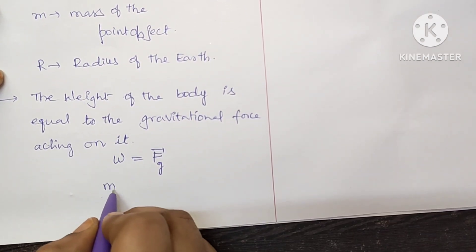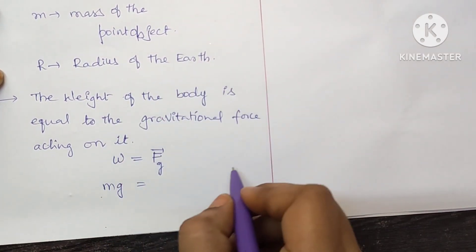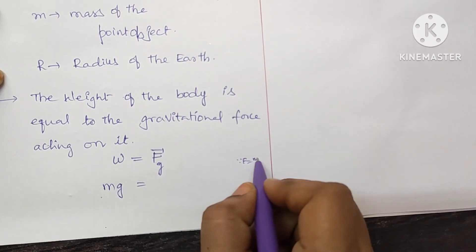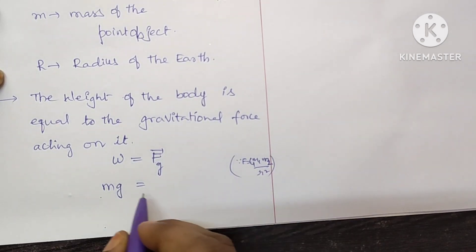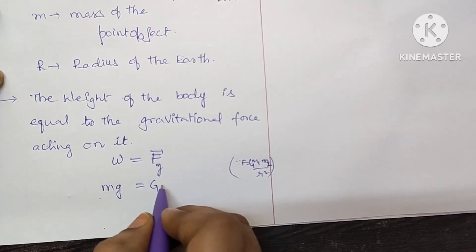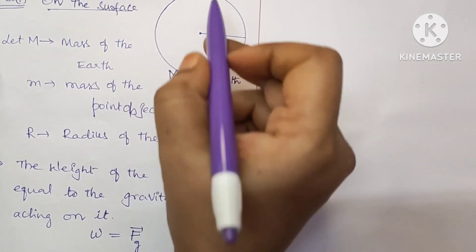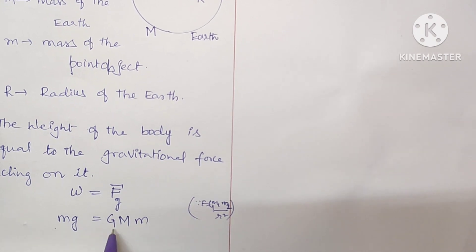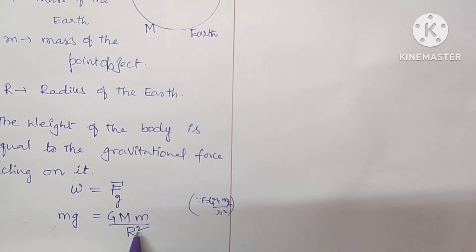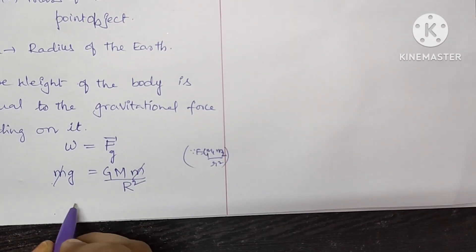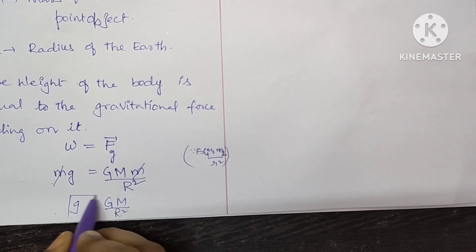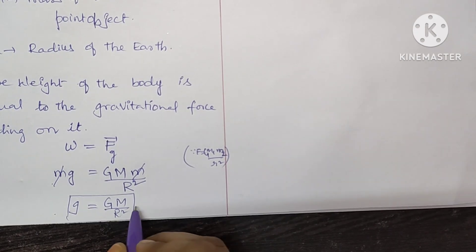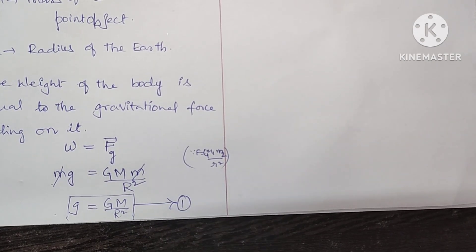The weight W equals Mg, and the gravitational force formula is F = G·M₁·M₂ / R². So here G times capital M (mass of the Earth) times small m (mass of the object) divided by R square. On both sides small m gets cancelled, and the remaining term gives small g = GM/R². This is the acceleration due to gravity when an object is on the surface — let it be equation number 1.